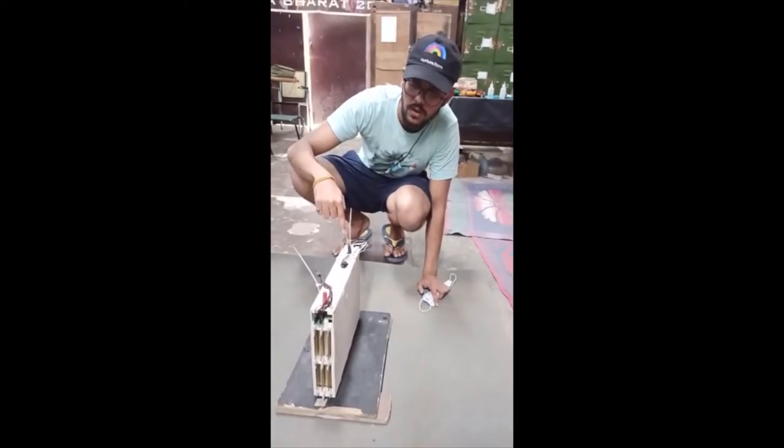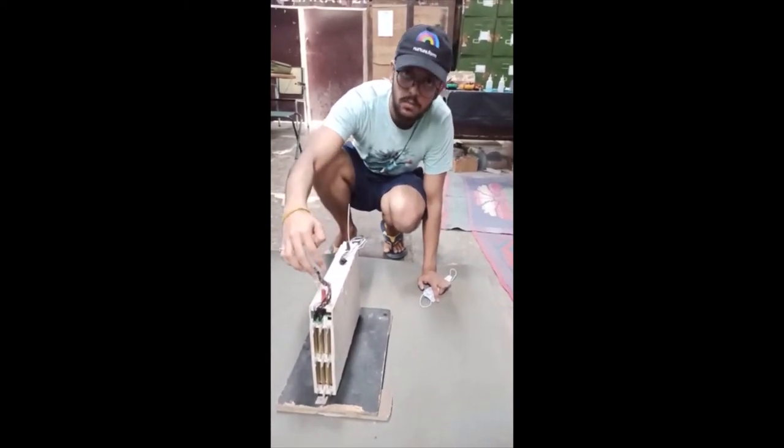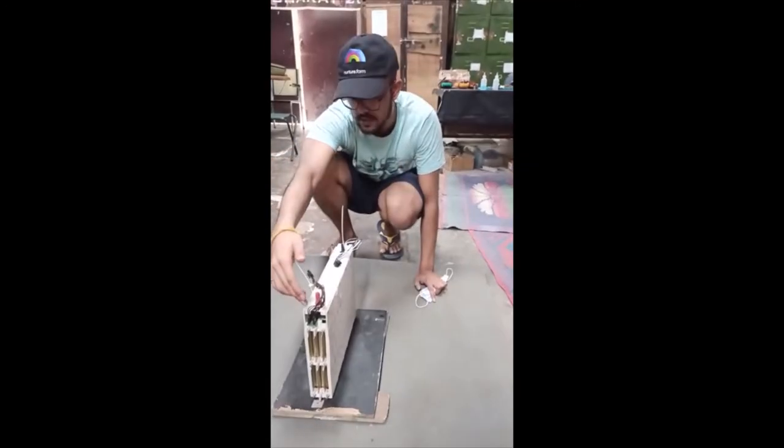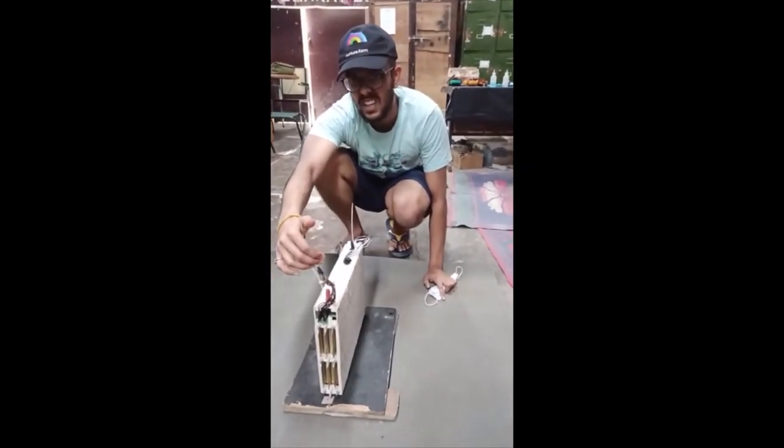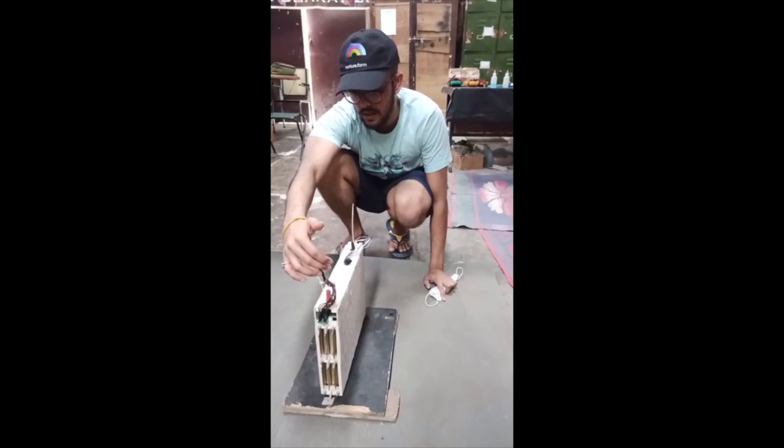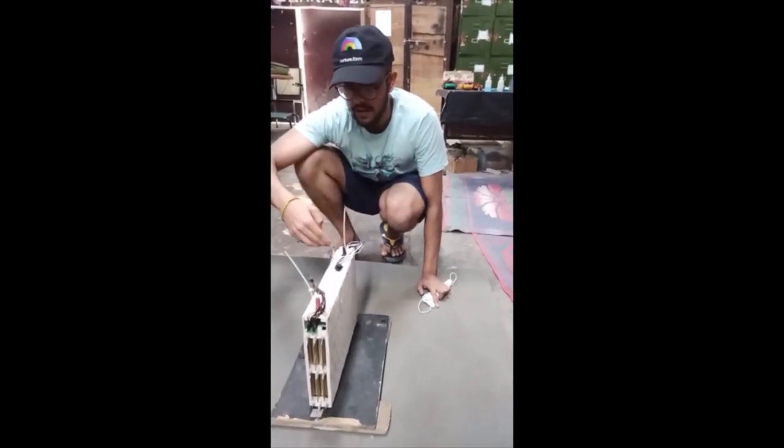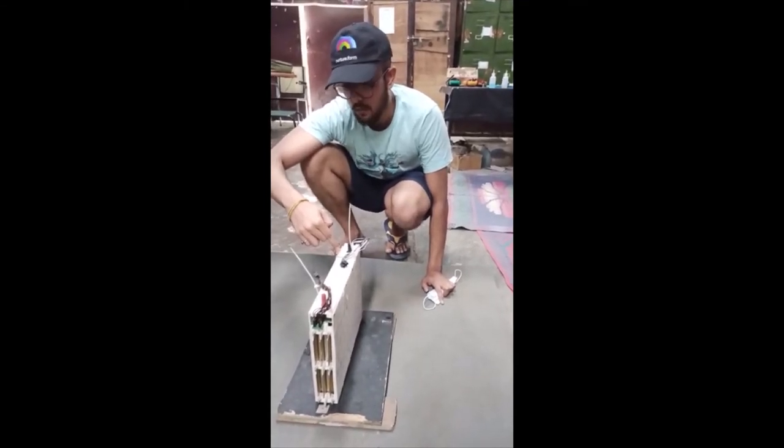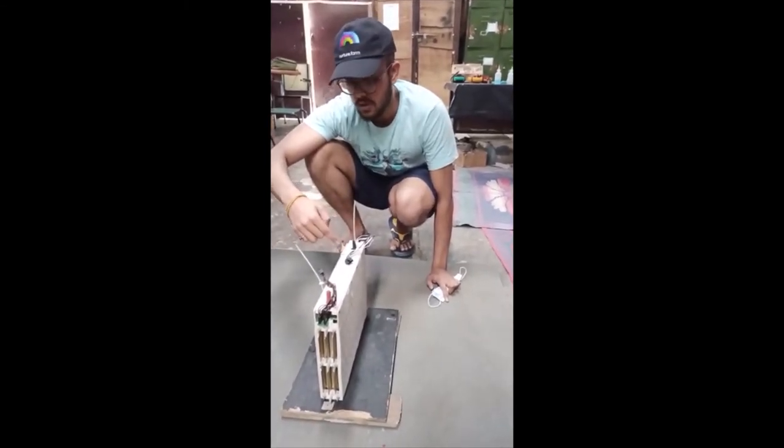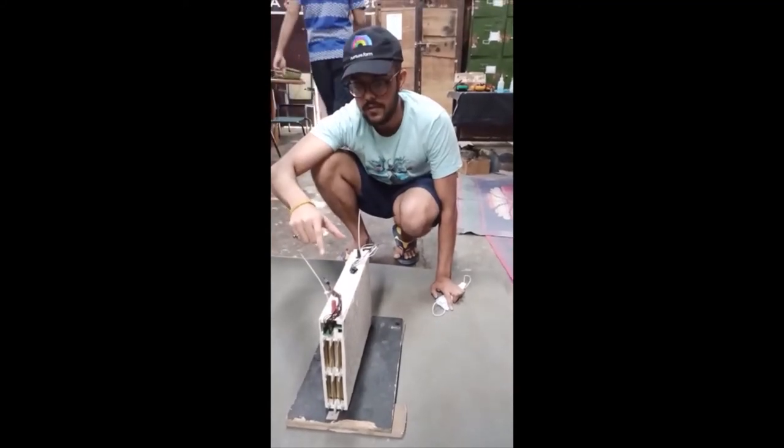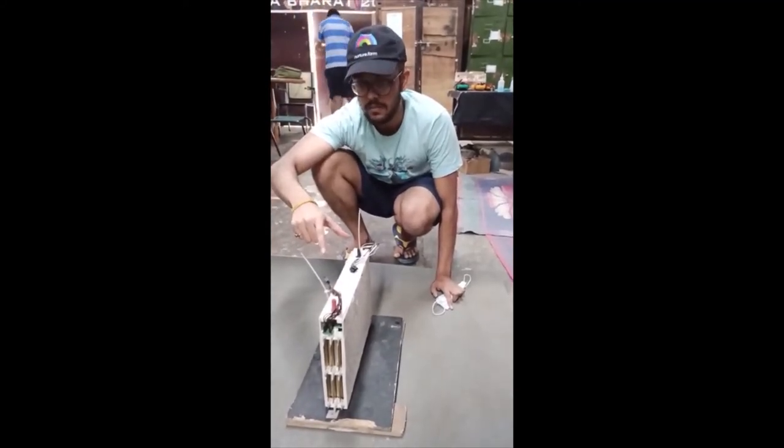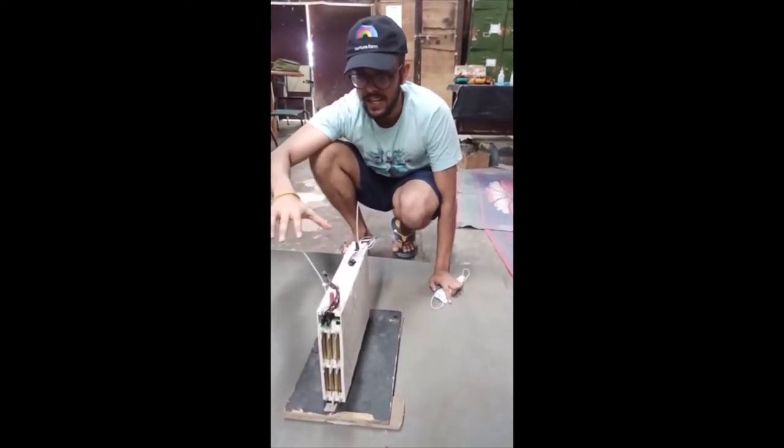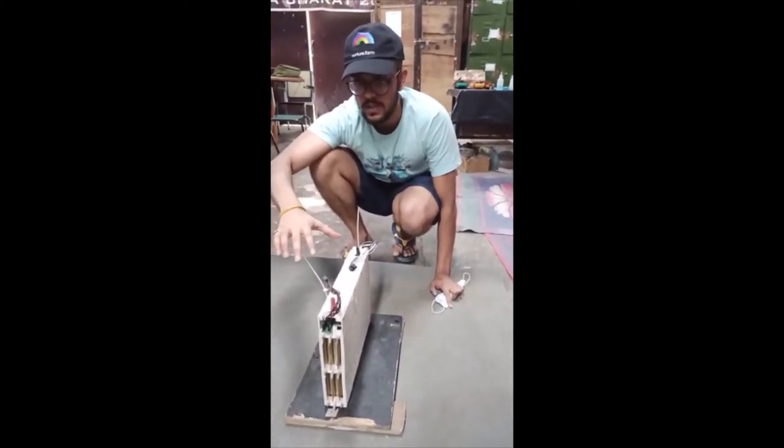In this module, this is the most positive terminal, the cathode. This is the most negative terminal, the anode. In this module we have sensors inside here. This is the wire which carries the information about the temperature of the batteries, and this wire carries the information about the voltage across batteries. These wires are connected to a battery management system.